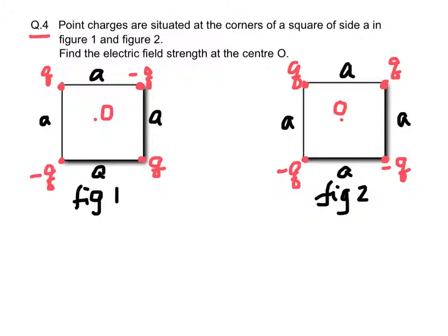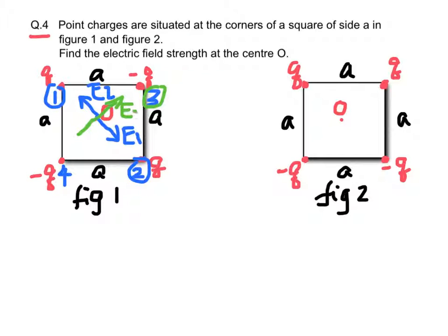Question number 4. For figure 1, the electric field strength at the center O due to charge 1 (E1) and due to charge 2 (E2) are of equal magnitude but different directions, so they cancel each other. Similarly, the electric field strength due to the third charge E3 and the fourth charge E4 are of equal magnitude with opposite directions, so they cancel each other too. Hence, the electric field strength at the center O in this figure is equal to 0.